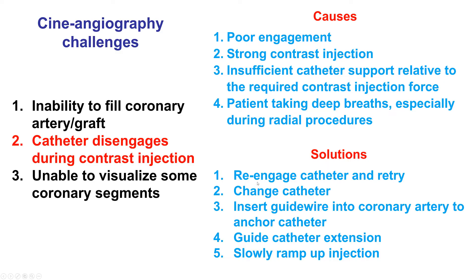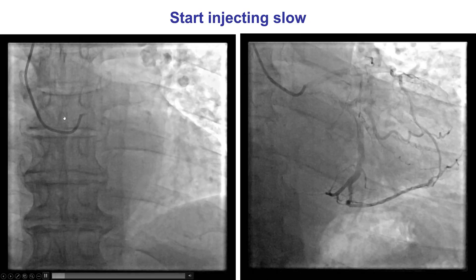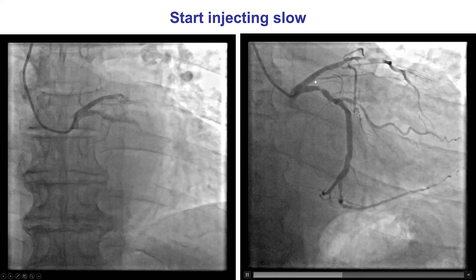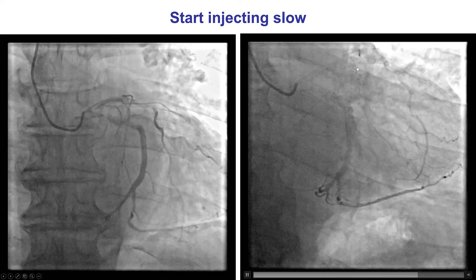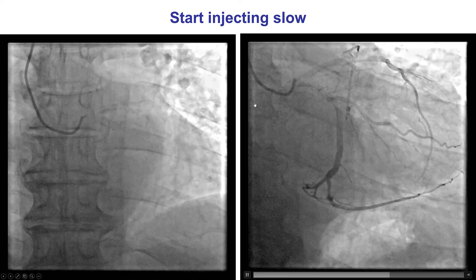How to fix catheter disengagement? Re-engaging using different catheters. Sometimes putting a guidewire can stabilize the catheter and enable good angiography, or a guide extension can be used. When injecting, it is important to start slowly and then increase the pressure as time goes by. This is an example in which forceful injection from the beginning pushes the catheter out, but with the same catheter and a slow ramp-up of pressure, good filling of the coronary artery and the ostium can be achieved without the catheter kicking back.